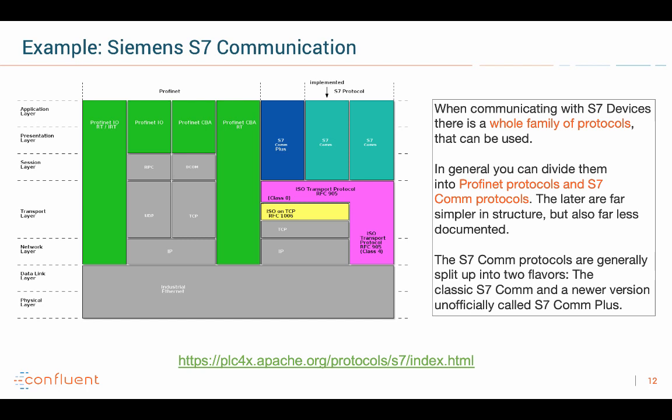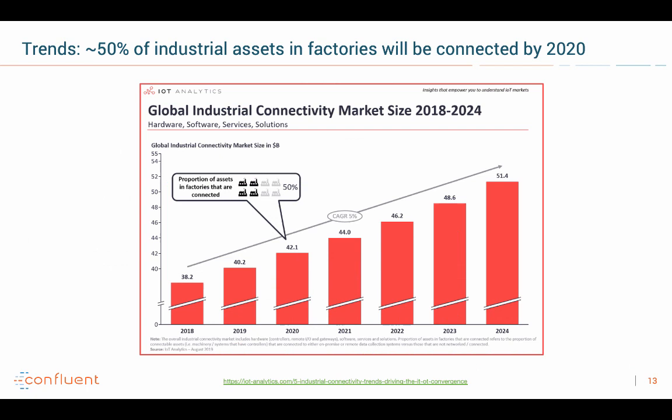Here's just one example from the PLC4X website. Siemens S7 communication is really a complex protocol — actually a whole family of protocols using Profinet and S7comm protocols. What's even more concerning is that these protocols are not standards and not open. Typically you have to really examine the technology, and sometimes depending on the vendor you have to decompile the data format yourself because there is no public description of it. So it's really hard to build a flexible integration layer on top of that.